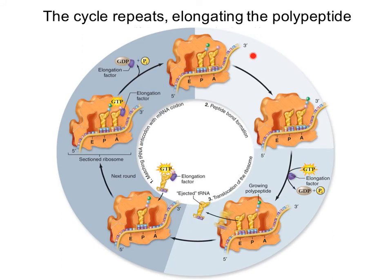This cycle repeats many times, for as many amino acids as the protein has. Every time, a new tRNA comes into the A site together with an elongation factor, which promotes the elongation of the amino acid chain. The peptide bond is then catalyzed, the elongation factor gets recycled, the tRNA moves into the next position, and the one that just transferred its amino acid exits. This cycle repeats for every amino acid in the peptide chain.